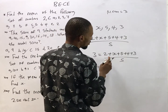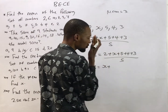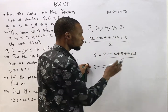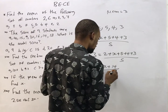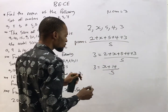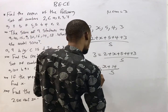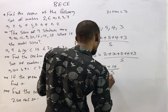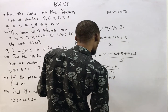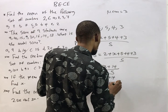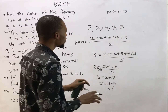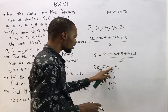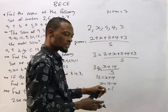Simplifying the numerator: 2 + 5 + 4 + 3 = 14, so: 3 = (S + 14) / 5. Cross-multiplying: 3 times 5 is 15, so 15 = S + 14, therefore S = 15 − 14 = 1. We can confirm: 14 + 1 = 15, and 15 over 5 is 3. Correct — the value of S is 1.